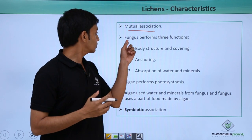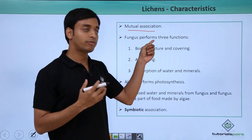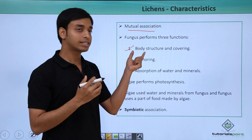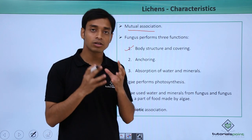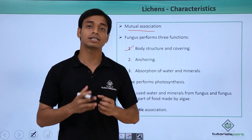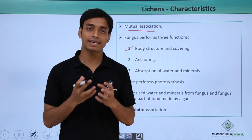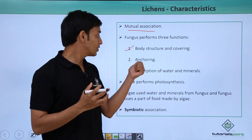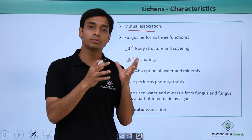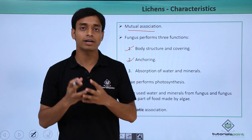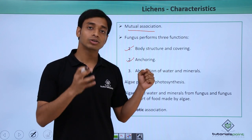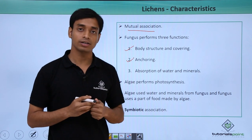So how does this work? The fungal component performs three major important functions. The fungus actually provides the basic body structure and covering for the lichens, and provides a surface area where lichens can exist. It also helps in the anchoring of lichens onto surfaces like rocks and tree barks, which are the areas where these lichens are found. This attachment happens because of the presence of fungus.